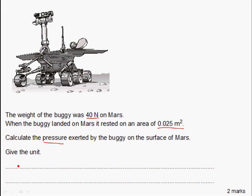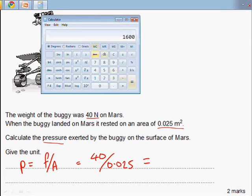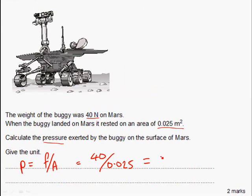What I always do is I write down the formula I'm using. This will give you marks if you make mistakes later on in the question. Pressure is equal to force divided by area. Put my numbers into my formula: 40 newtons divided by 0.025. Now I need to get my calculator. 40 newtons divided by 0.025 and it's 1,600. So 1,600 newtons per meter squared.